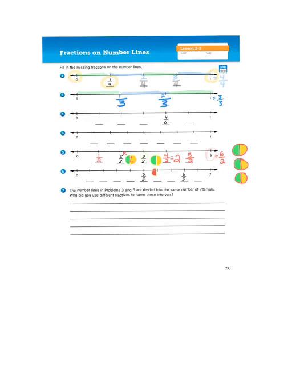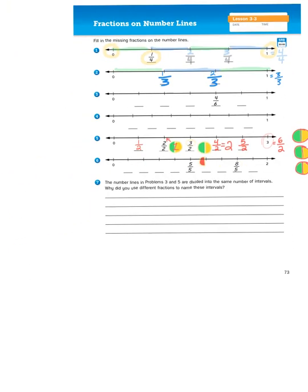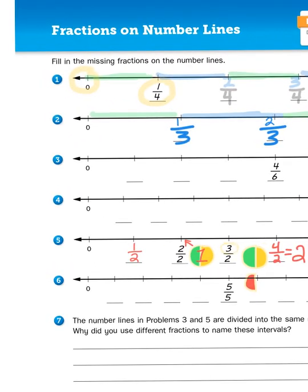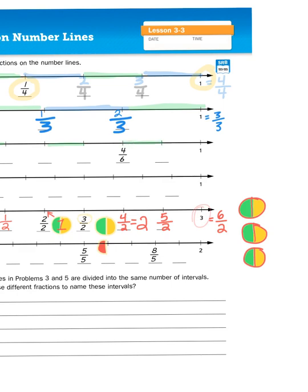So when you are thinking about the fractions and labeling these number lines, you need to think about how many parts are there. Don't look at the blanks where you have to fill in the fractions. Look at the segmented parts of the number line. When you start to chart the number of segments, that's going to help you see how many total parts there are.